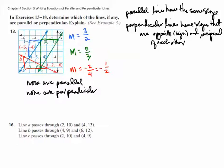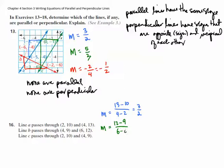In problem 16, lines are given in point form. We need to calculate the slopes. For the blue line, M equals (13 minus 10) over (4 minus 2), which gives 3/2. For the green line, M equals (12 minus 9) over (6 minus 4), which is also 3/2. We can see that lines A and B are parallel.